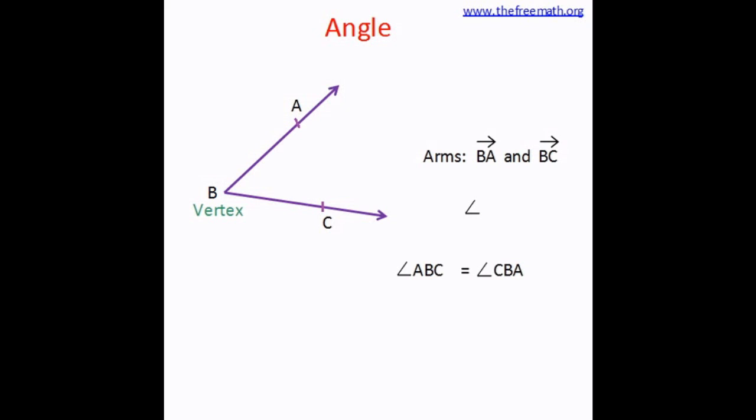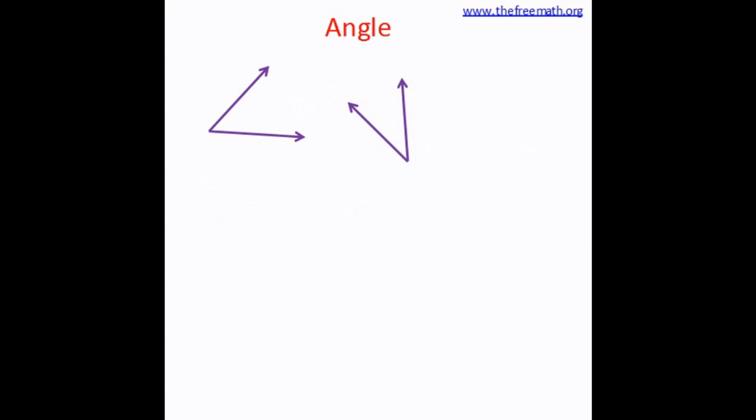There are different ways to draw an angle. The angle can be drawn like this, or it could be like this, or it could be even like this where the lengths of the arms need not be equal. One arm could be shorter than the other.